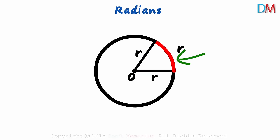Remember, the length of the arc is equal to the radius of the circle. This angle formed here is one radian. That's the concept of radians.